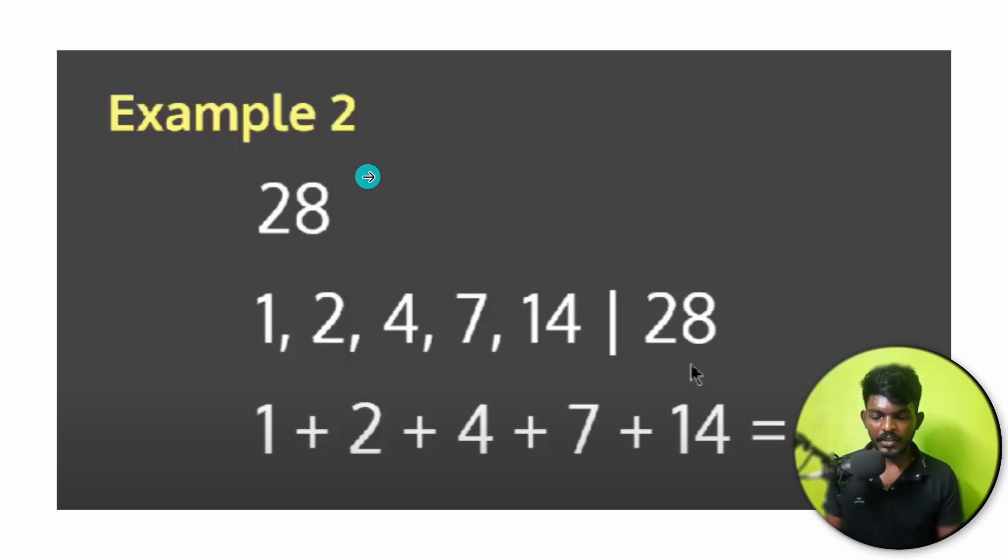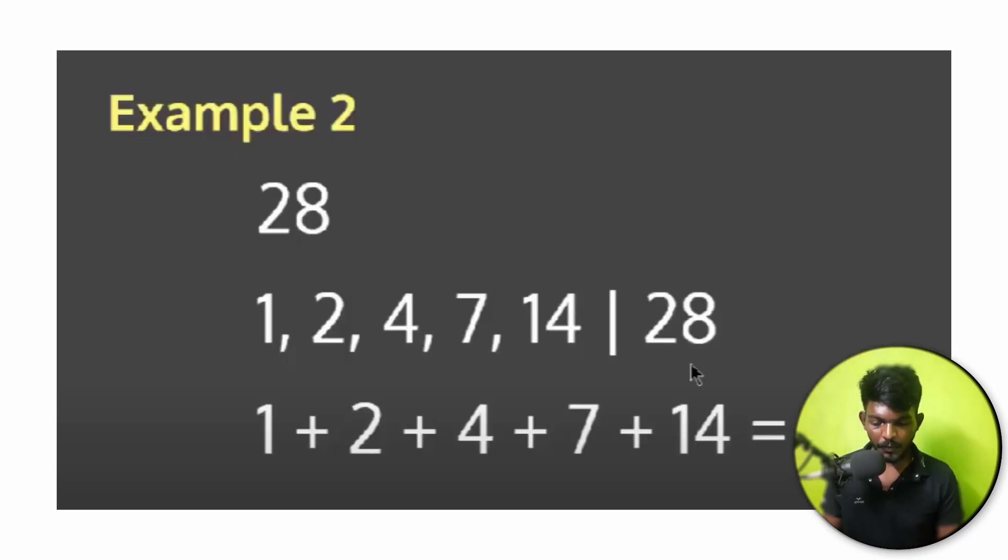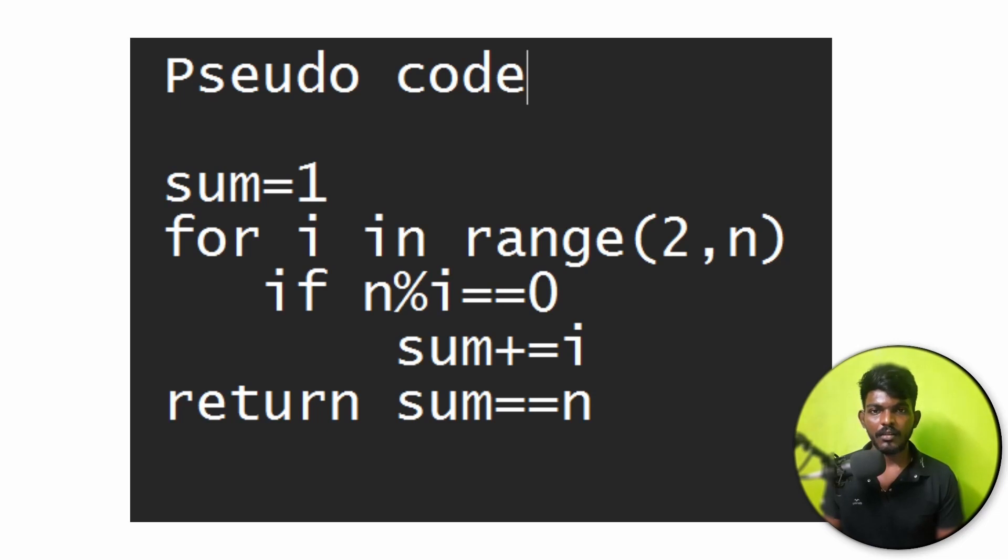For example, 28's square root is approximately 5 point something. If we check up to 5, we find divisors like 2 and 4. When we have 2 and 28, dividing gives us 14. So we have sum plus i plus n divided by i.